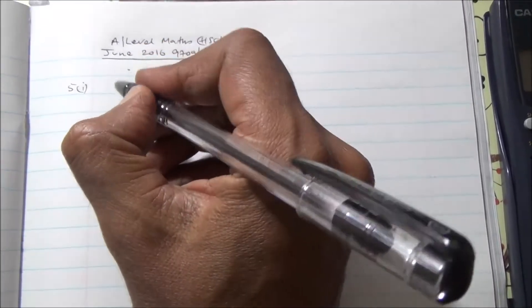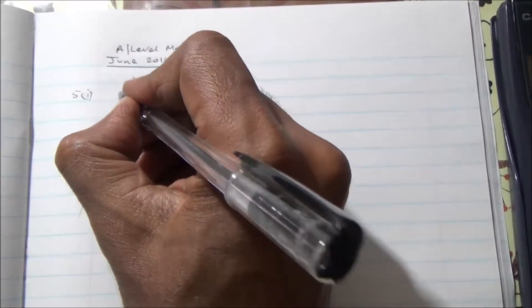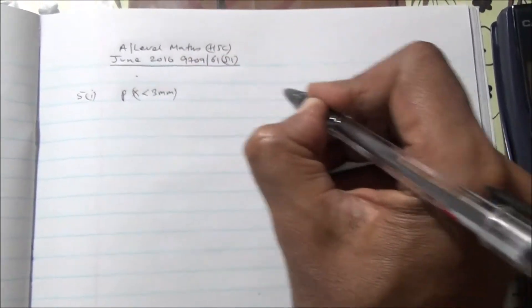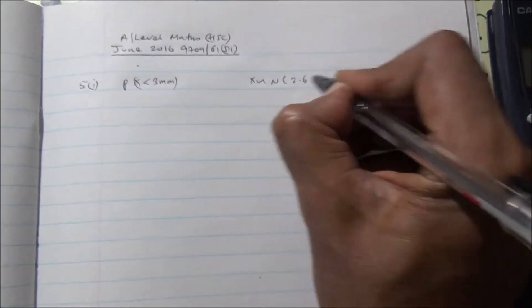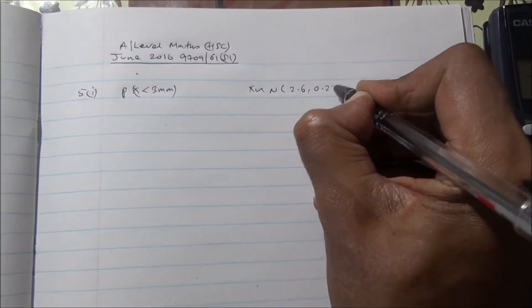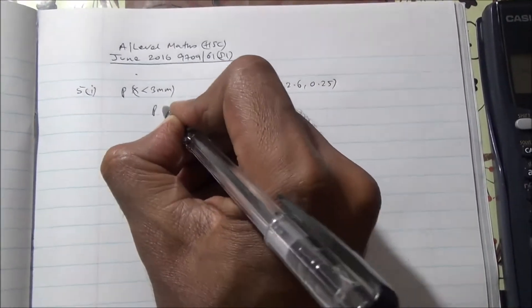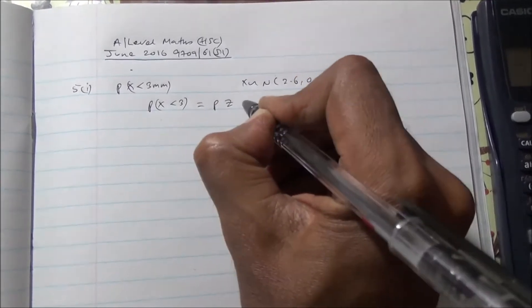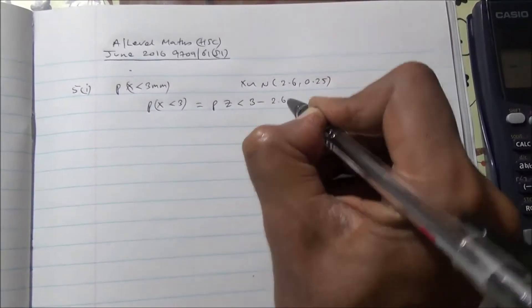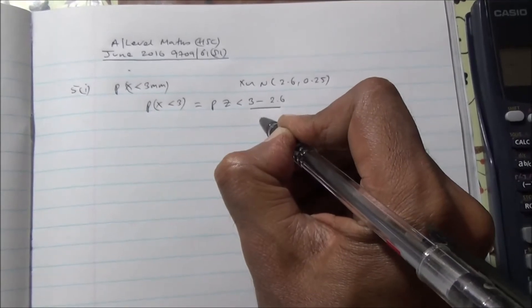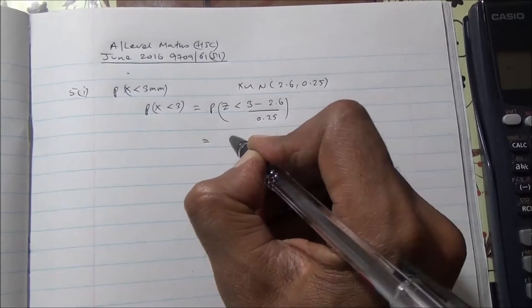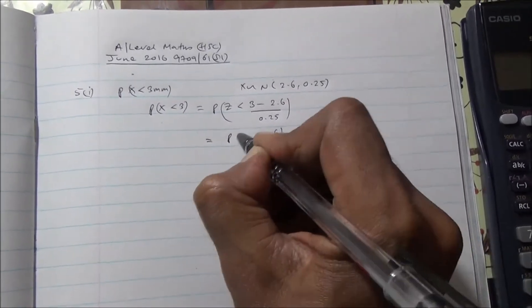For the first part of the question, we need to find the probability that a straw will fit into the hole. That means the probability of X, the diameter, has to be less than 3 mm. We have a normal distribution with mean 2.6 and standard deviation 0.25. Therefore, P(X < 3) standardized is P(Z < (3 - 2.6) / 0.25), which gives P(Z < 1.6).